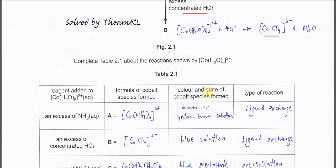So I already told you A is this one. This is the product that forms, the cobalt with six ammonia. The color and state is brown solution, because it's aqueous state, right. So it's a brown or yellow-brown solution. Type of reaction is ligand exchange. All the H2O inside the complex ion exchange with the ammonia.